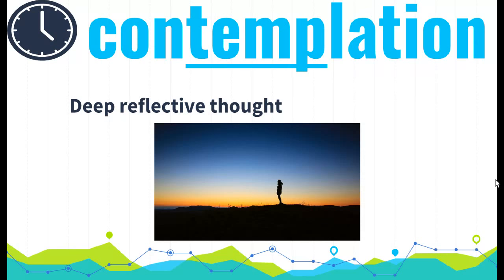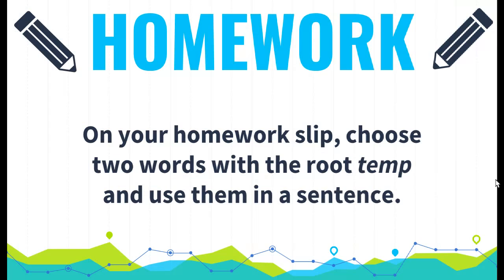Contemplation is deep reflective thought — it's just a form of the word contemplate. This person looks like they've hiked to maybe the top of a mountain, or to a place where they can see far around them. It looks like sunrise or sunset, so they are probably in deep reflective thought, in a state of contemplation.